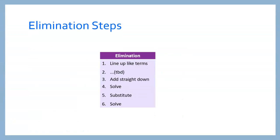Here's a summary of the elimination steps we've looked at so far. The first step is to line up like terms. We'll skip step 2 for just a second. Then we add straight down, solve, substitute back in, and solve. This looks a lot like the substitution steps we had before, except these original steps might make it a little bit faster and easier.